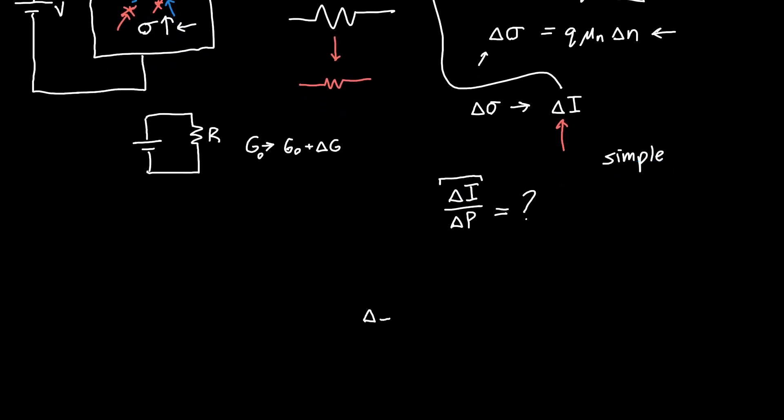We can just write out Ohm's law because we know this is a conductor, so the current in terms of the change in conductance is delta I equals the voltage we're applying times delta G, our change in conductance. Now we have to know something about the geometry of our sample.